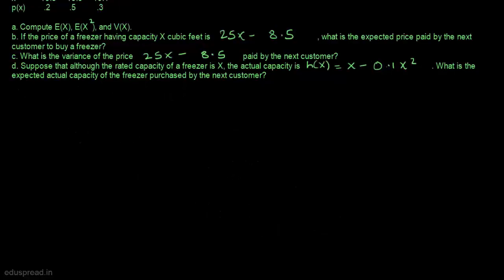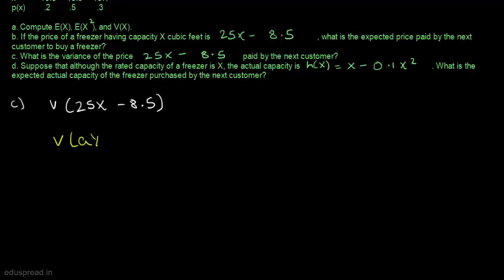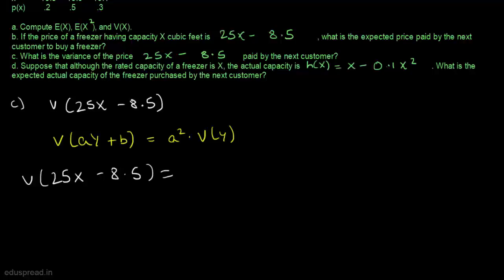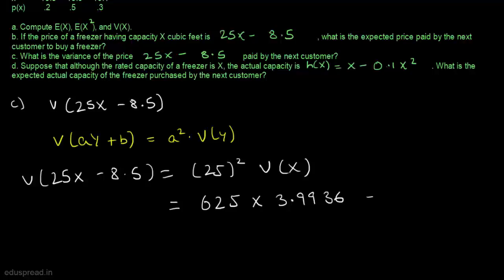In part C, we calculate the variance of the price paid by the next customer, which is Var(25X − 8.5). Using the proposition Var(aY + b) = a²·Var(Y), we get Var(25X − 8.5) = 25²·Var(X) = 625 × 3.9936 = 2496.